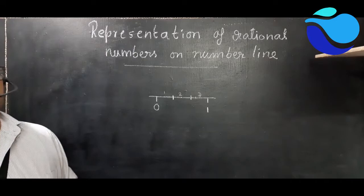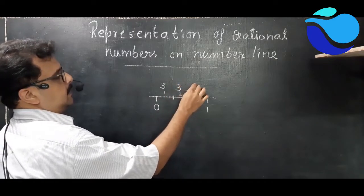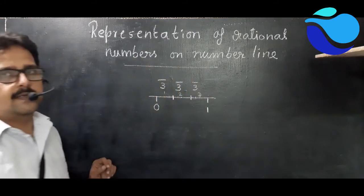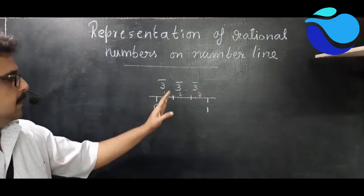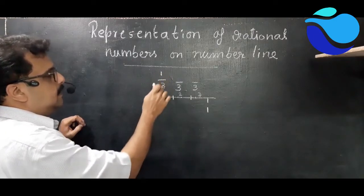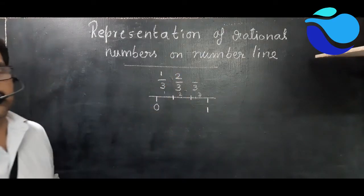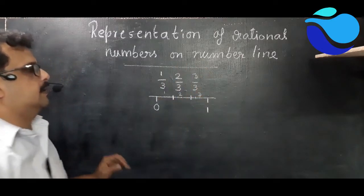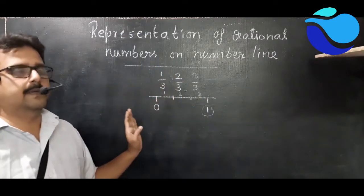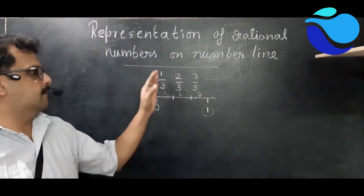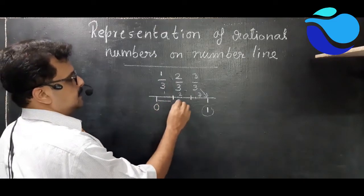To represent a fraction or a rational number, you have to put the total number of parts in the denominator. So this part is the first part out of three, here it is the second part out of three, and the last one is the third part out of three — which is three by three, always equal to one. So this is how you represent fractions on a number line: one by three, two by three, and three by three.